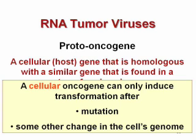A proto-oncogene in the normal cell is a cellular or host gene homologous with a similar gene found in a transformed virus. It's not normally tumorigenic — we all have these genes and express them during development. They get switched off and back on at various important parts of our development and life cycle. They're important genes — we wouldn't be here without them. But after transformation, they can cause tumors. It was the discovery of retroviral oncogenes that led to the discovery of proto-oncogenes in our normal genome that cause non-virally induced cancers in us and other animals.